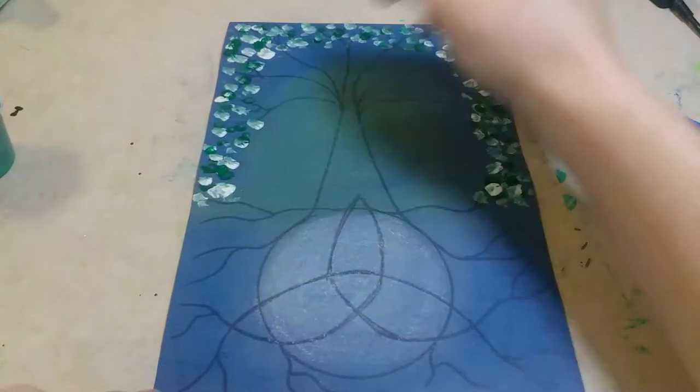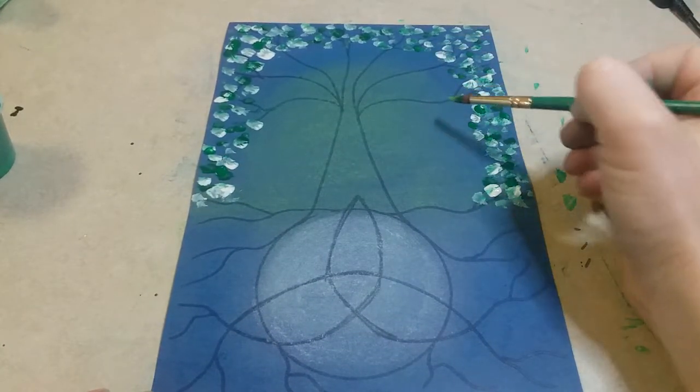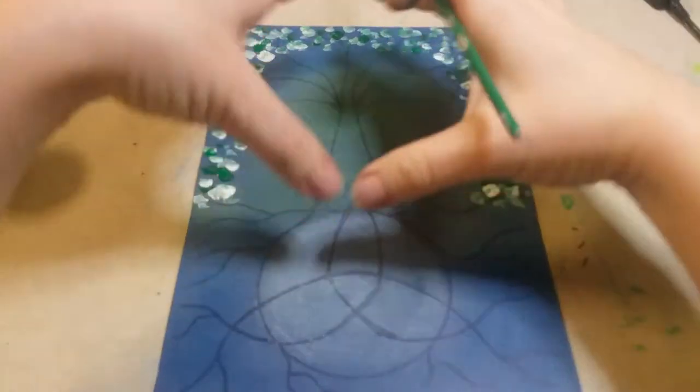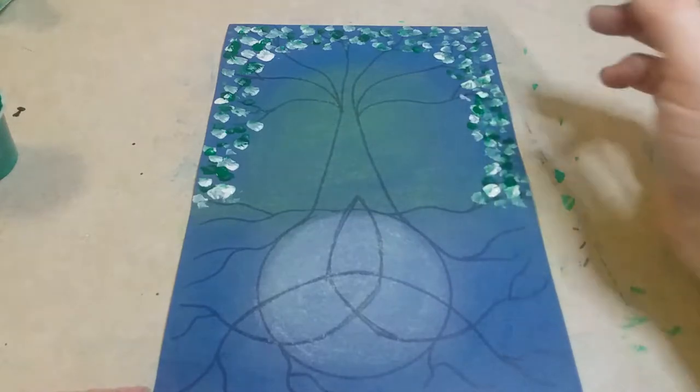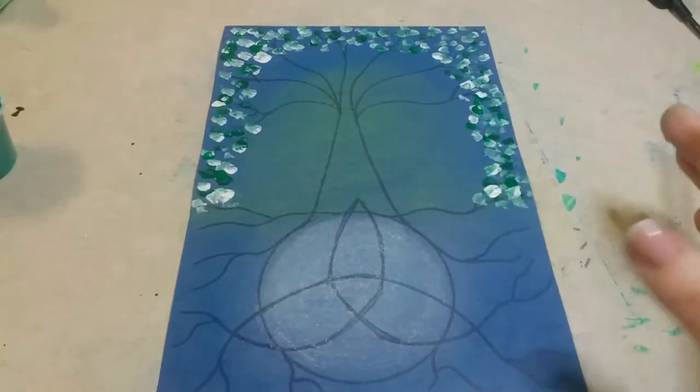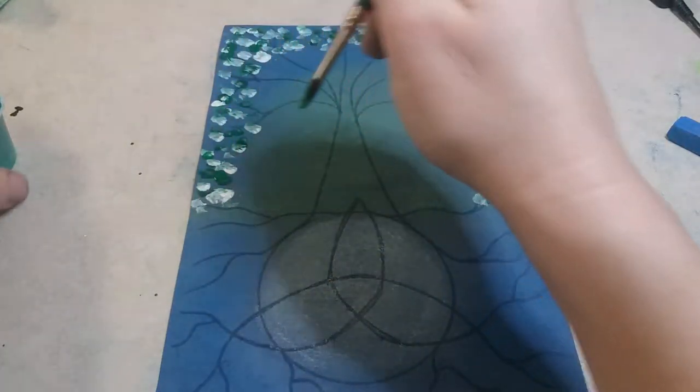So I filled up all the edges. If you've noticed I did leave a little bit of blue so that way it's not just green out to the paint and you don't get to see that blue hue, because that's really what creates that glowing effect. And so what I'm gonna do now is start on the grass.